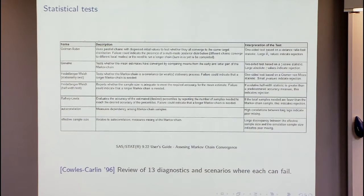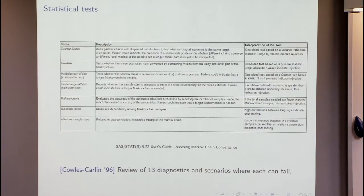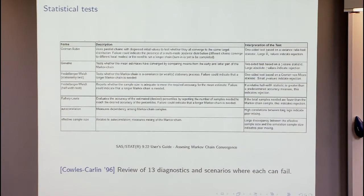Diagnostics can fail in various scenarios. What we wanted to do in this work was abstract out what it means to diagnose whether convergence has occurred — frame this as a computational problem and understand how hard it is. You see various papers where somebody says this diagnostic fails to show non-convergence, but here's another diagnostic that will detect non-convergence. So how can we frame the problem of convergence with as many restrictions as possible and still show it's hard?